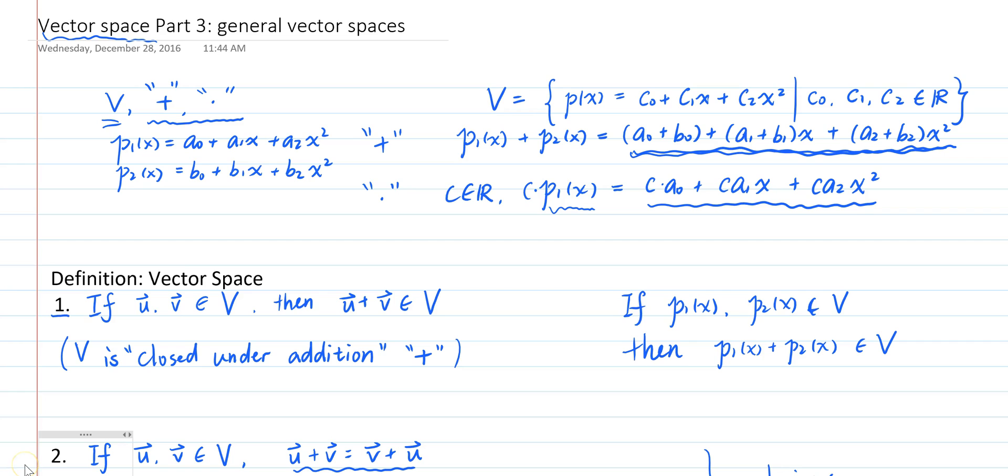Now, because the set V of all polynomials of degree 2 or less have the same 10 properties that R^n has, the two sets V and R^n have a lot in common. In fact, if we know certain things about R^n that are true, and they're only based on these 10 abstract properties, then we can deduce that these things may also be true for the set V. So we can extend our intuitions about R^n to more abstract sets that have these properties.